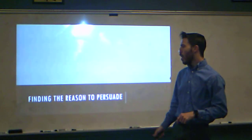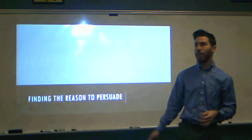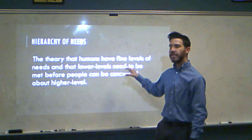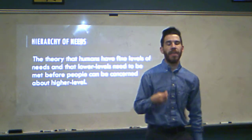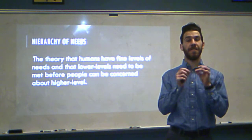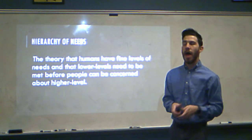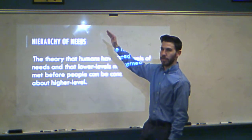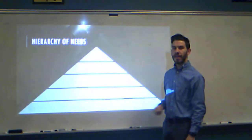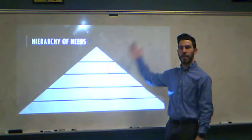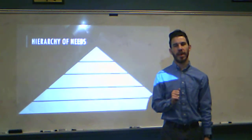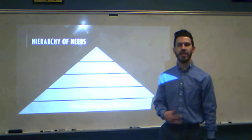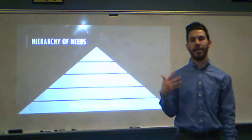Now as we go on, we're going to find the reason to persuade. And when we do that, there's something called the hierarchy of needs. This is the idea and theory that humans have certain levels, and the lower levels have to be met before we can get to the higher level. When we look at the hierarchy of needs, it looks something like a pyramid. There are five levels - and first is the bottom level: physiological needs. These are the things you have to have to live, basically.